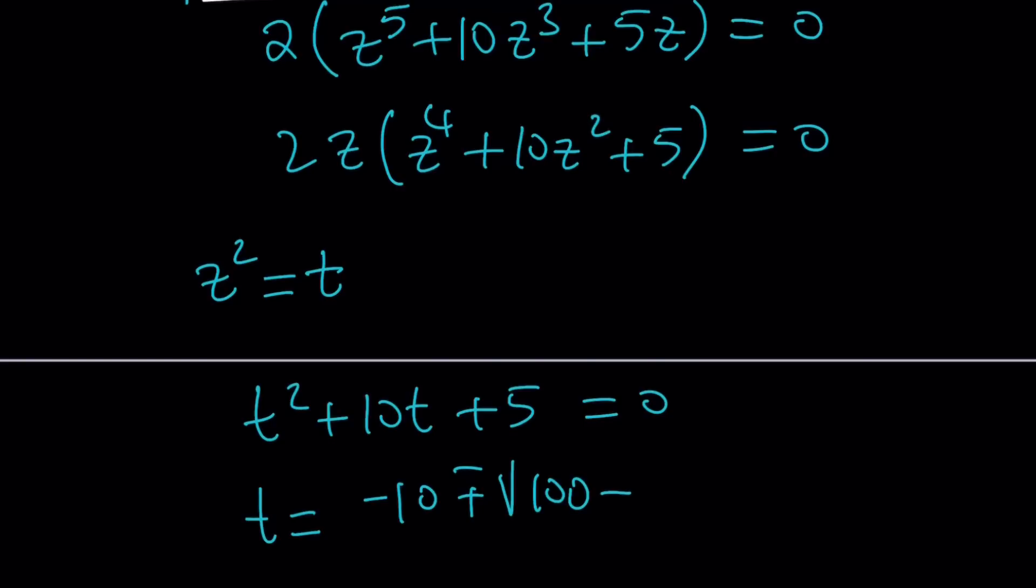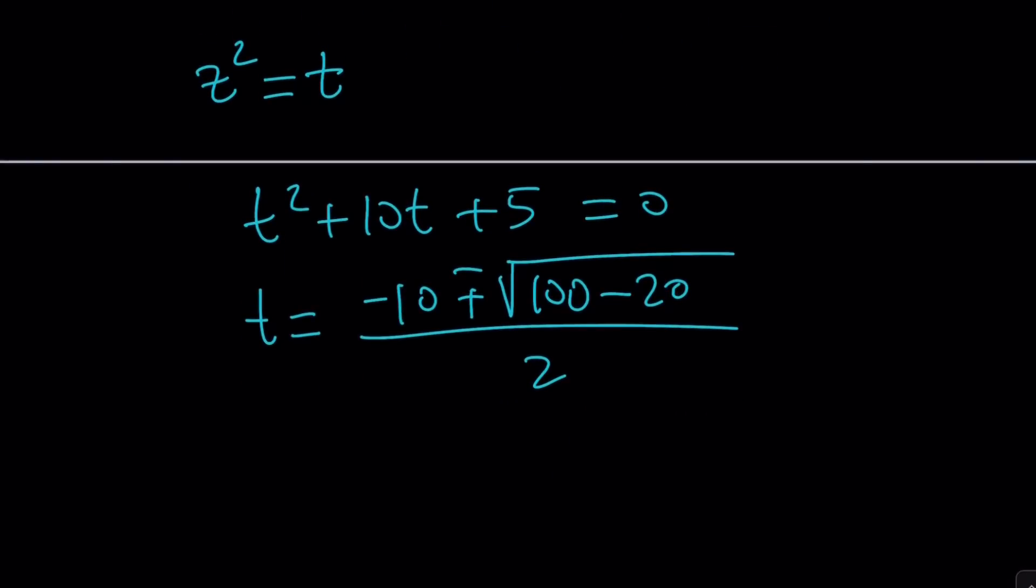...which is 100, minus 4ac, which is 20. That's going to be the square root of 80. That's going to be 4√5. And then if you divide everything by 2, you're going to get -5 ± 2√5.